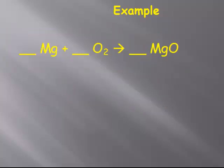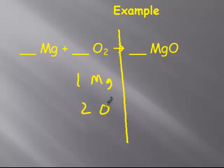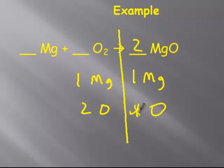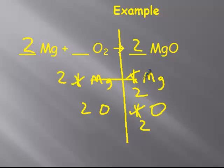Example two — an easier one: Mg + O2 → MgO. Left side: 1 Mg, 2 O's. Right side: 1 Mg, 1 O — not balanced. Place a 2 in front of MgO: gives 2 O's and 2 Mg's. Now place a 2 in front of Mg to give 2 Mg's. Equation is now balanced: 2 Mg + O2 → 2 MgO.